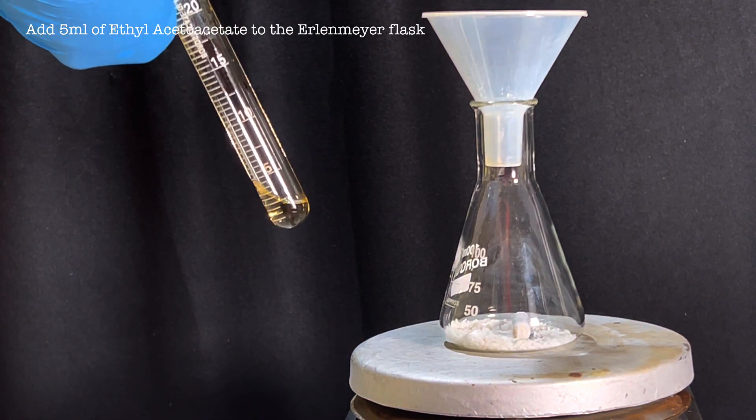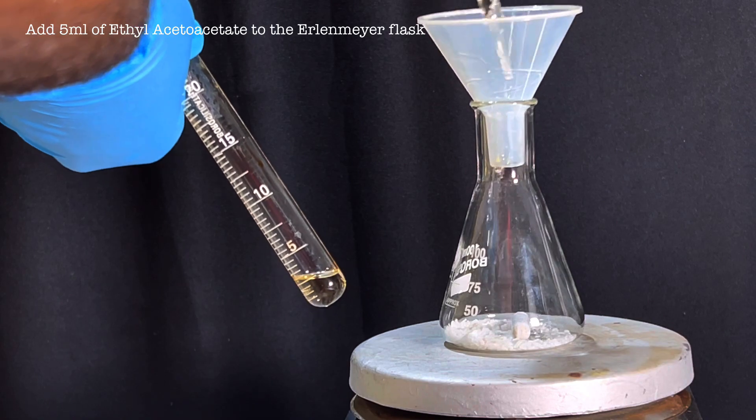Next, 5 ml of ethyl acetoacetate was added to the flask using a glass pipette.